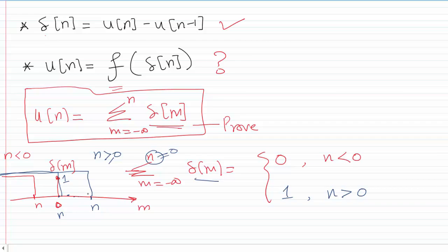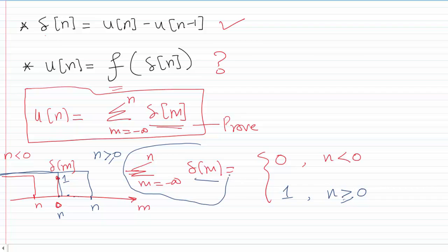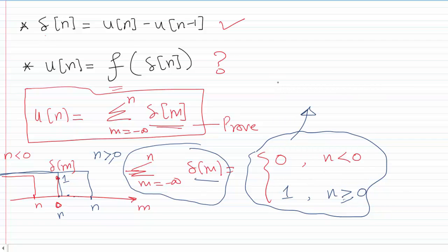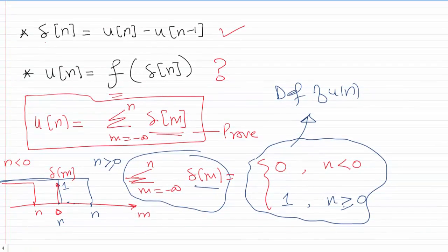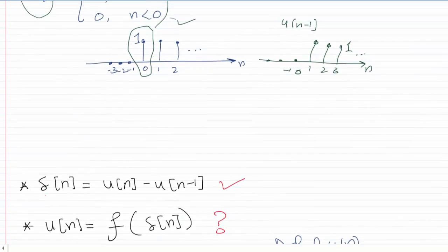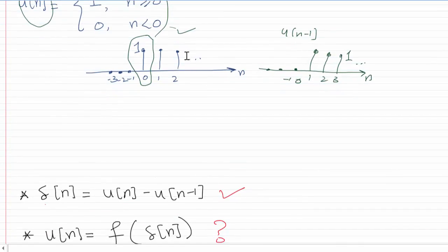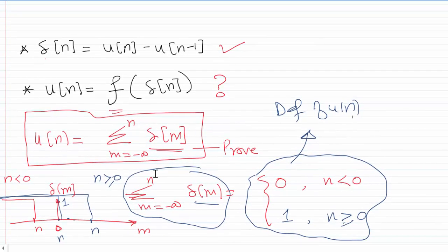Adding all the zeros up to and including zero gives us one. We can see that this expression is nothing but the definition of u of n that we discussed earlier. So we have proven this statement — this summation expression is nothing but u of n. That's the first of the two proofs.